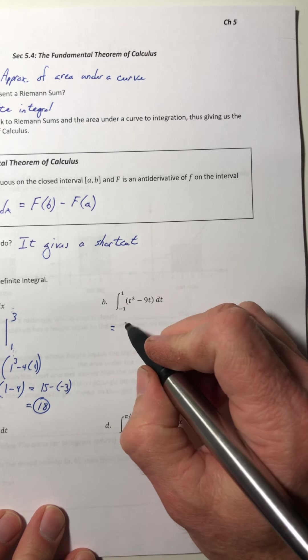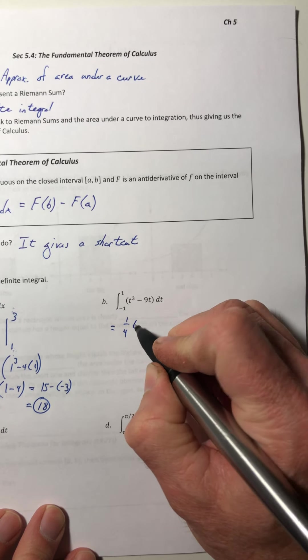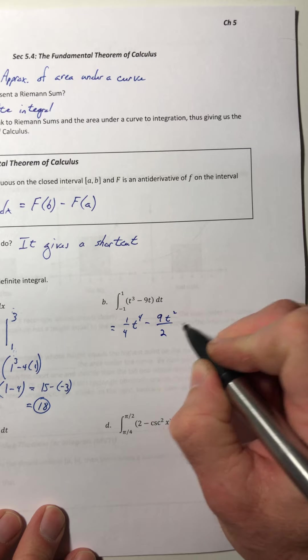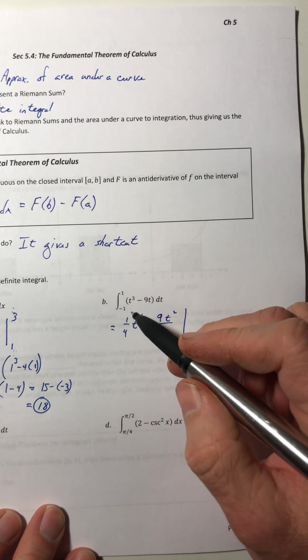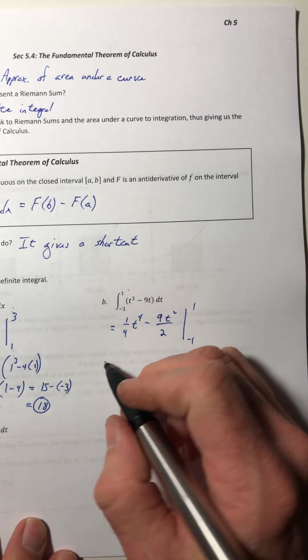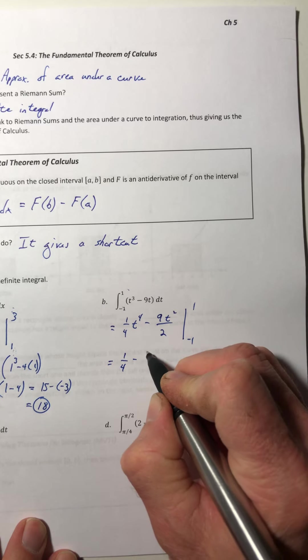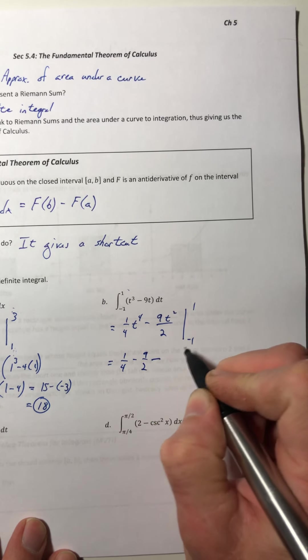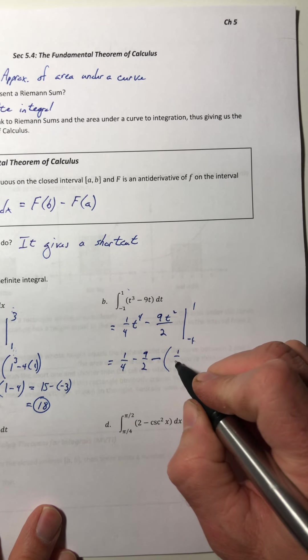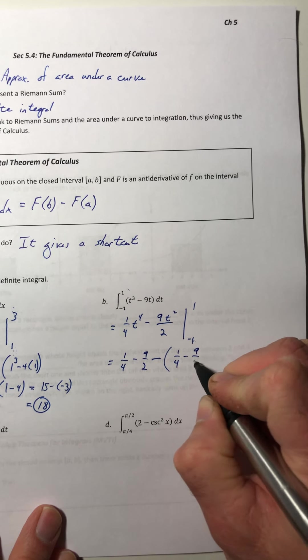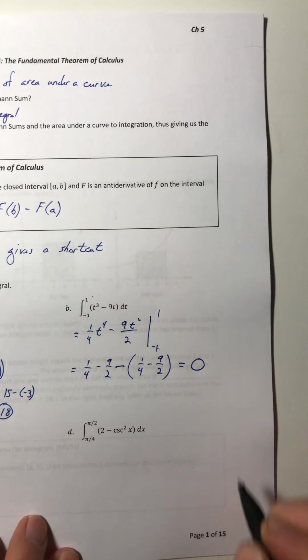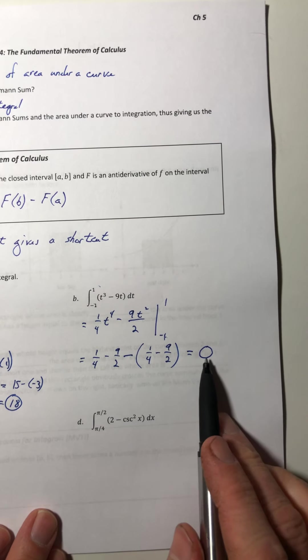Let's try it again. Integrate this. So 1/4 t⁴ minus 9t²/2. And we're going from -1 to 1. So plug in your upper bound. So 1/4 minus 9/2. And then it's always minus. Now plug in the lower bound. So if I plug in that, I get 1/4 minus 9/2, which gives us a total of 0.